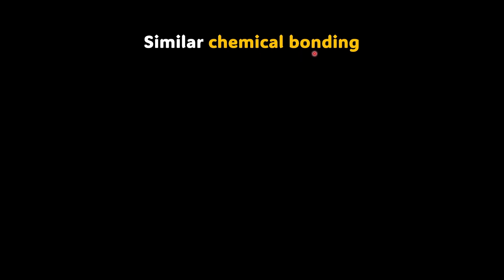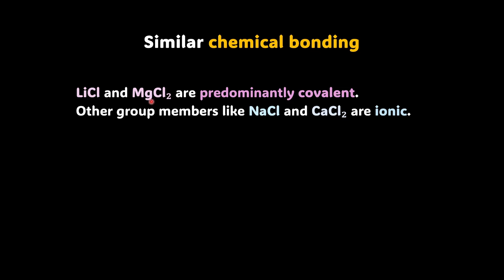Now let's take it with an example. So if I talk about lithium chloride and magnesium chloride, well, they are predominantly covalent, whereas the other members like NaCl and calcium chloride are ionic. So lithium and magnesium, clearly there is a diagonal relationship and that results in a very similar chemical bonding. And if we talk about another diagonal pair, that is beryllium and aluminium, and look at these compounds. Beryllium oxide and aluminium oxide, both are amphoteric. That means they react with both acids and bases.